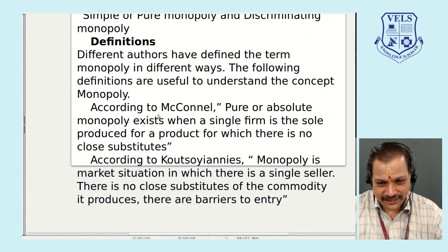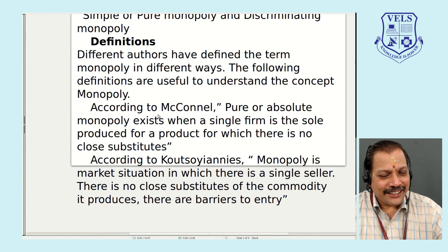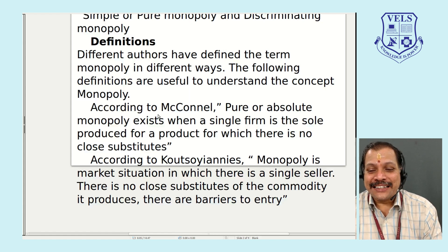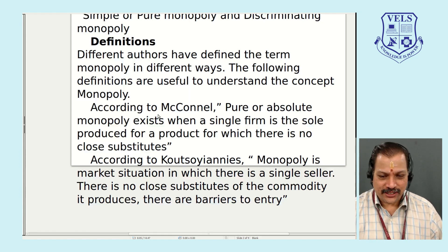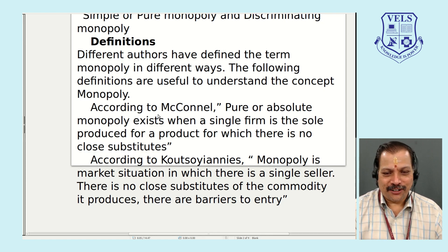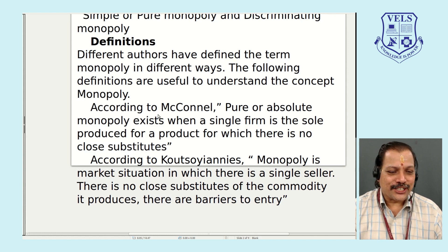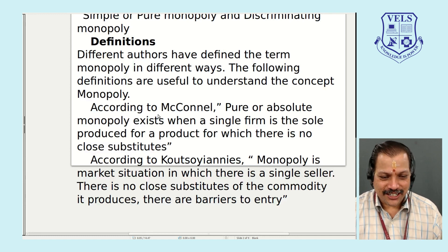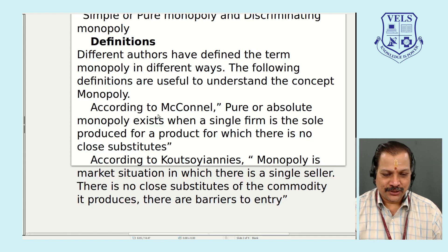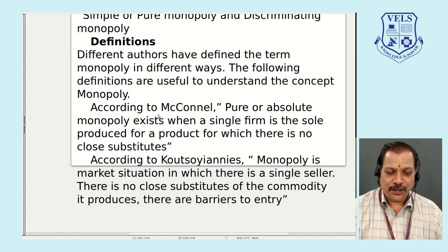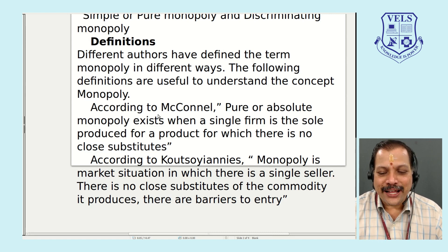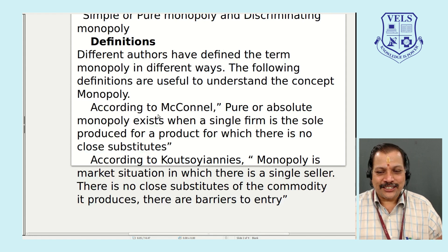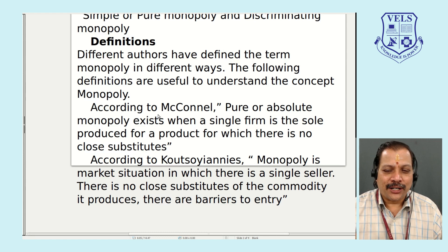According to Magnell, pure or absolute monopoly exists when a single firm is the sole producer of the product for which there is no close substitutes. According to Koshianis, monopoly is a market situation in which there is a single seller, there is no close substitute of the commodity it produces, and there are barriers to entry.